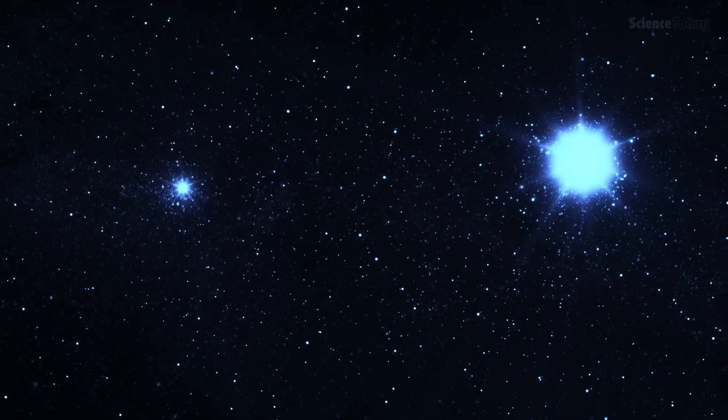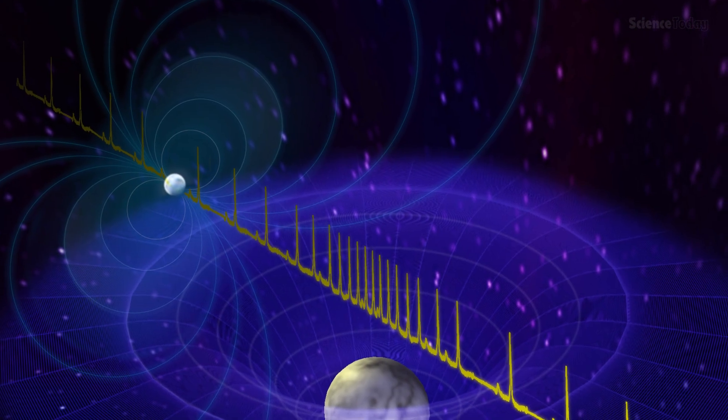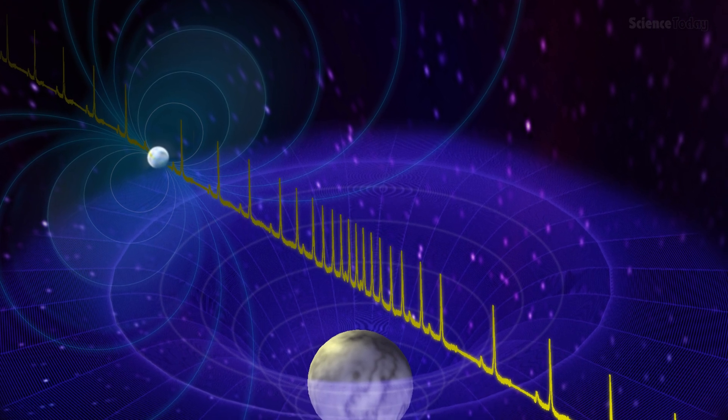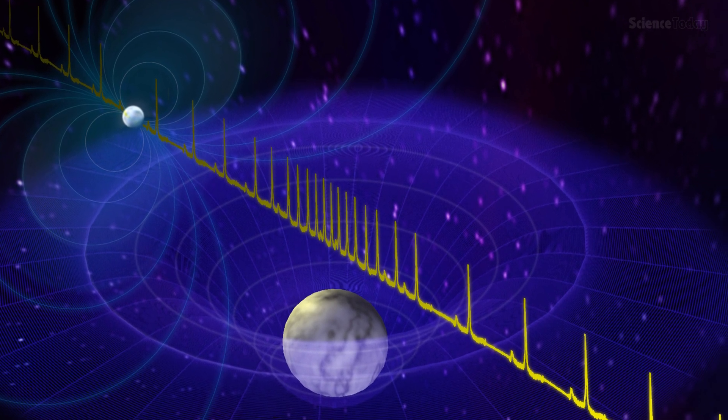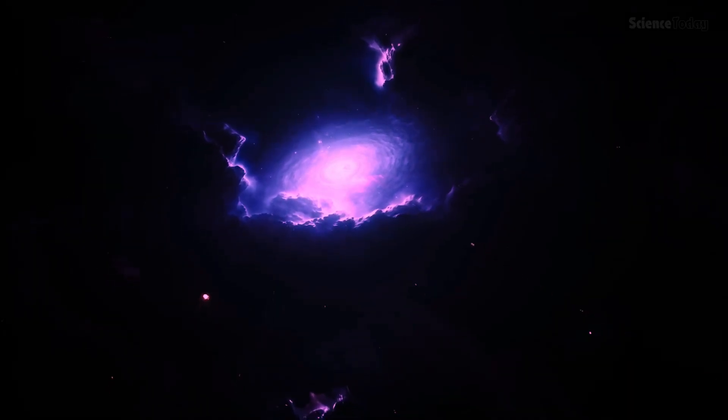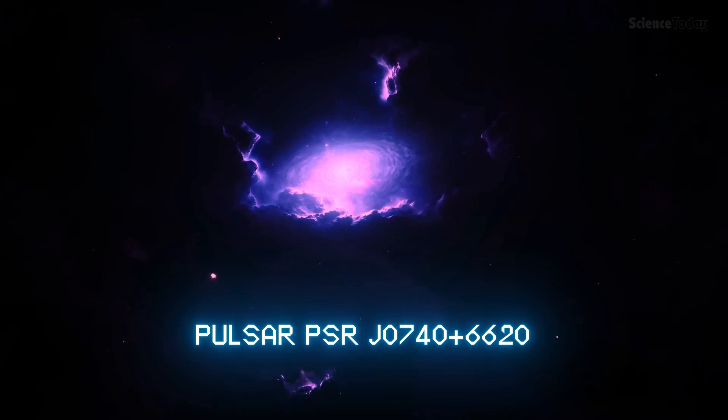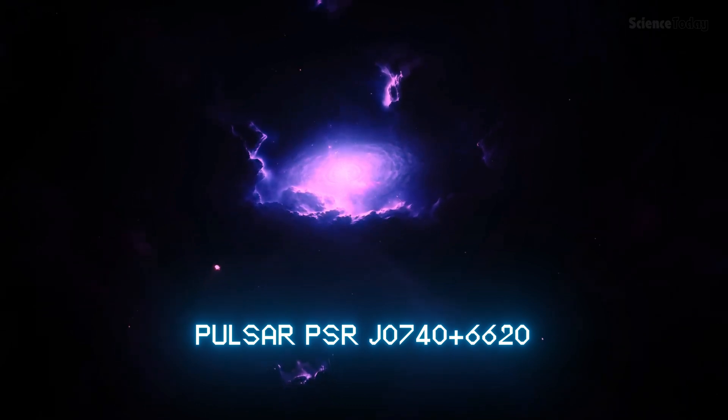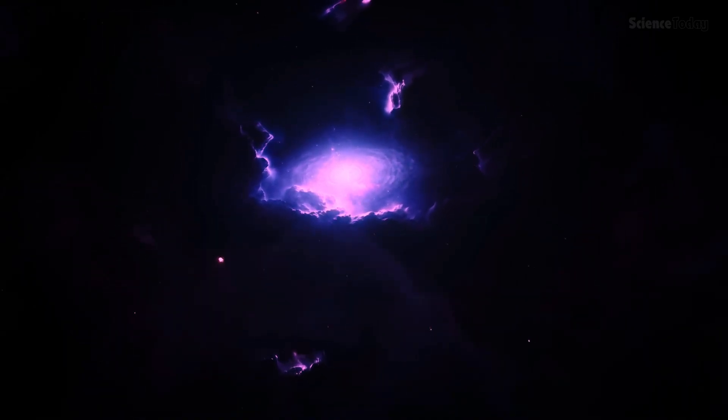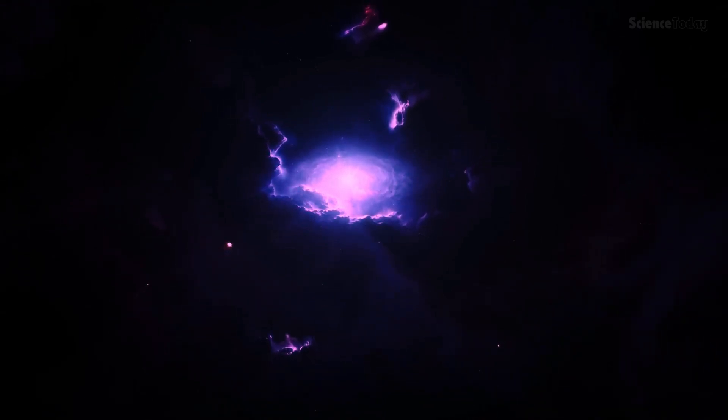Theoretical models of neutron star interiors often predict quark matter cores in stars exceeding two solar masses. Observations of neutron stars with masses around this limit, like the famous pulsar PSRJ-0740 plus 6620, suggest we might already be looking at hybrid stars, objects transitioning into quark stars.